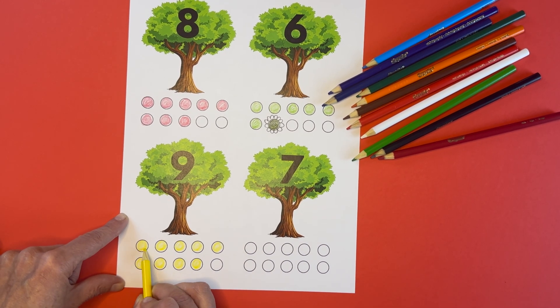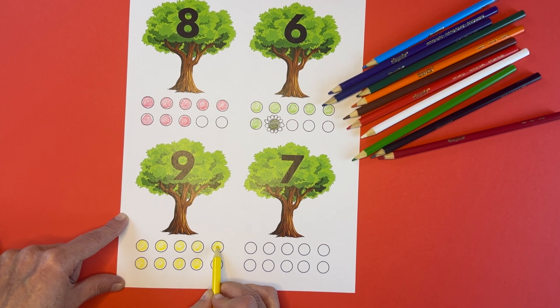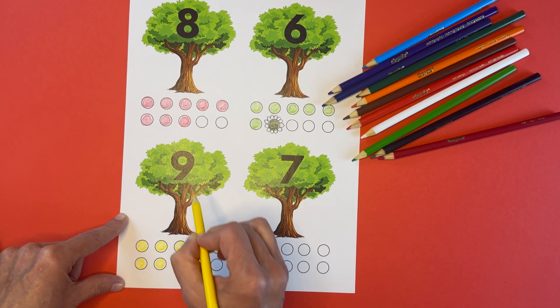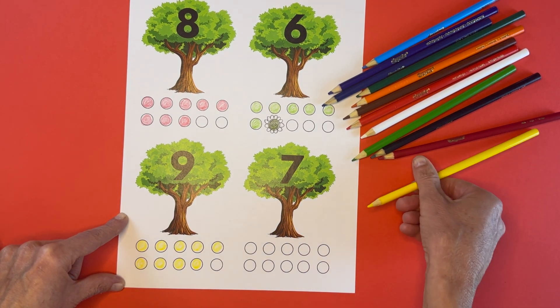Let's count them. One, two, three, four, five, six, seven, eight, nine yellow apples under the number nine apple tree.